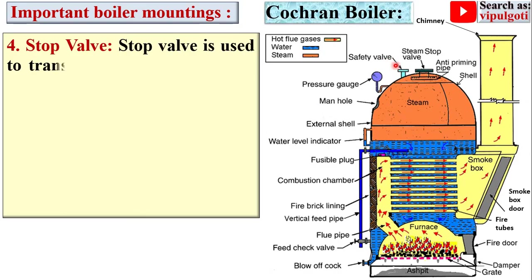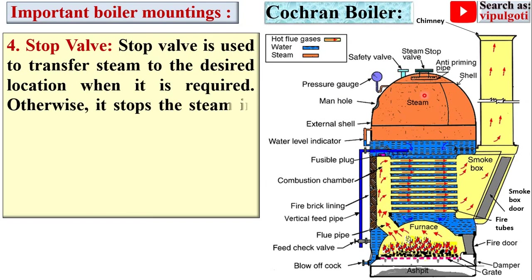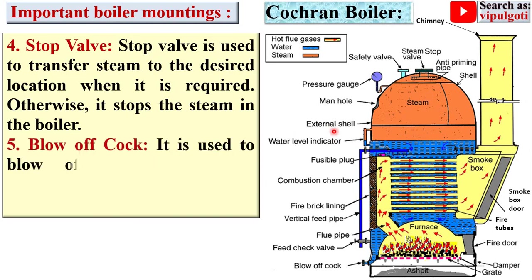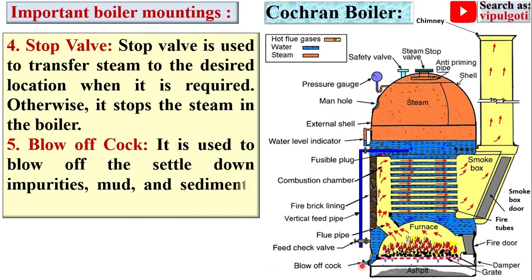The stop valve is used to transfer steam to the desired location when required; otherwise it stops the steam in the boiler. The blow-off cock is used to blow off settled impurities, mud, and sediments present in the boiler water — it is generally used to remove impurities from the boiler shell.